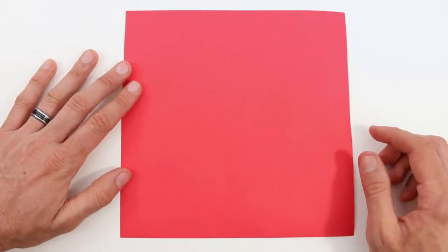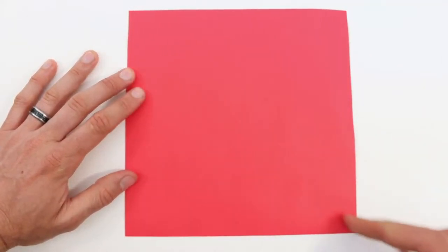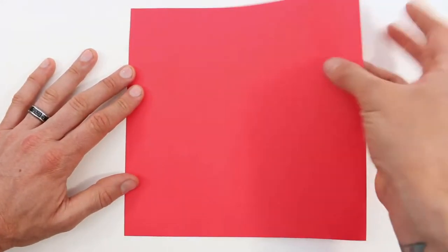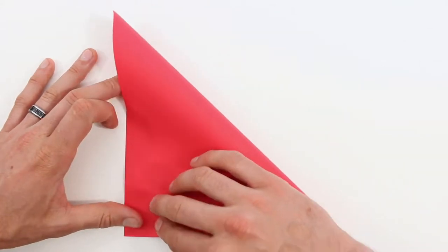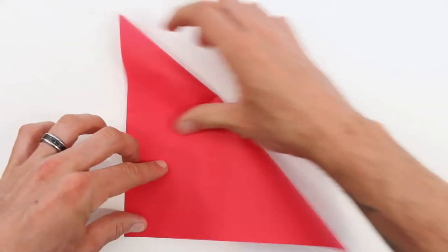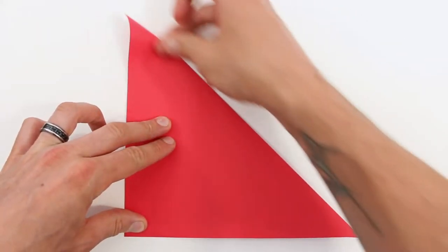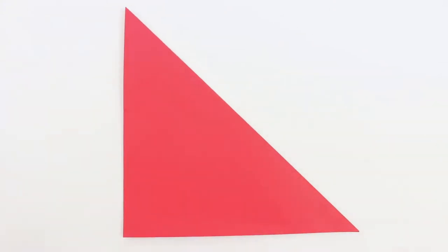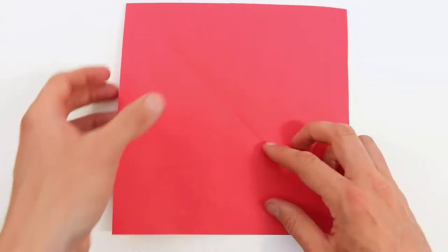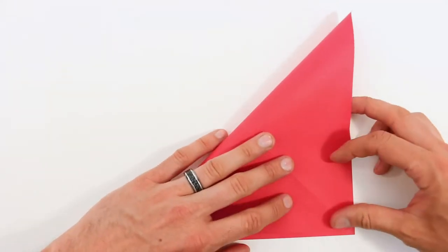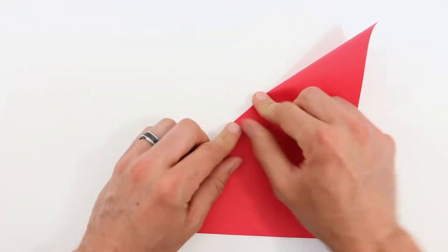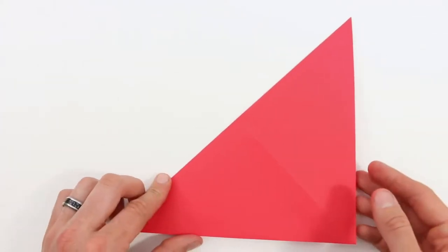Now we're going to start by folding in half along both of the diagonals. So we'll bring the top right corner down to the bottom left corner, make sure those corners line up and crease it all the way across. Now unfold and bring the top left corner down to the bottom right corner. Then crease it corner to corner and then unfold.